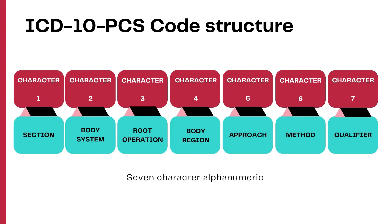These are the seven characters from this section. The first one is section, second is body system, third is the root operation, fourth character represents body region, fifth character is approach, sixth character identifies the method used, and the seventh character is the qualifier.